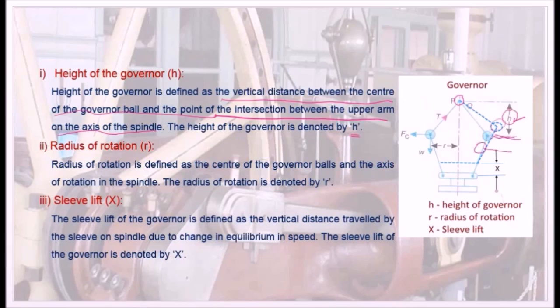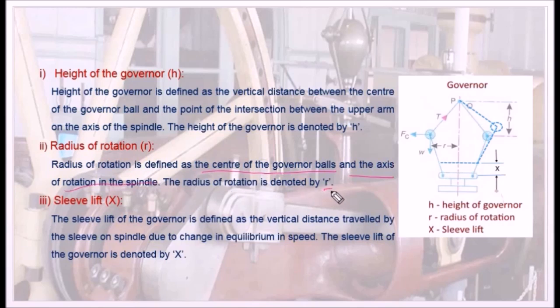Now let us see the next one. Radius of rotation R. Radius of rotation is defined as the center of the governor balls and the axis of rotation of the spindle. The radius of rotation is denoted by r. The distance between the center of the ball and the spindle axis is called the radius of rotation.